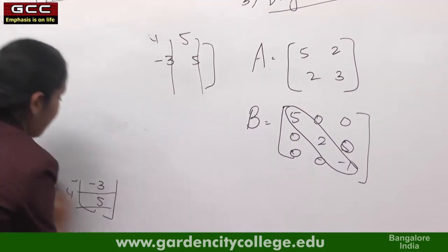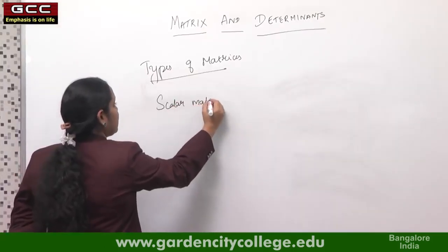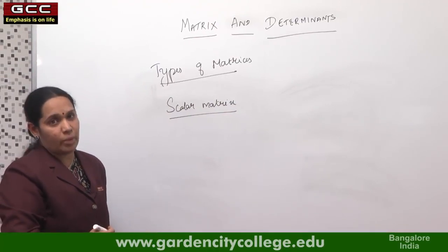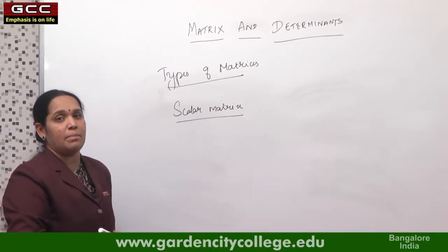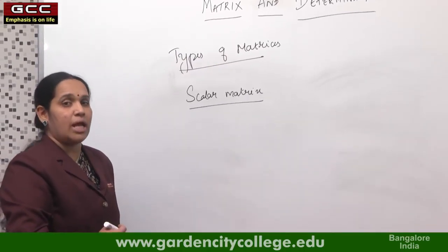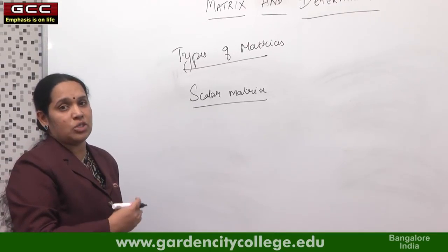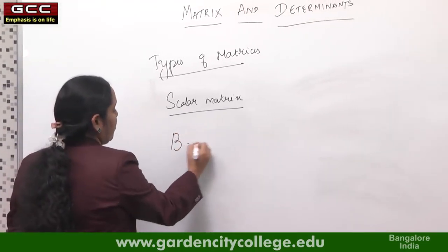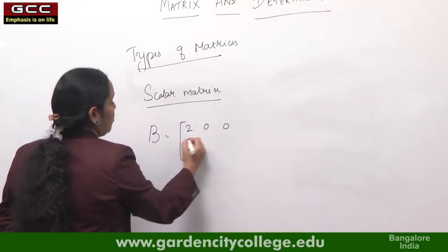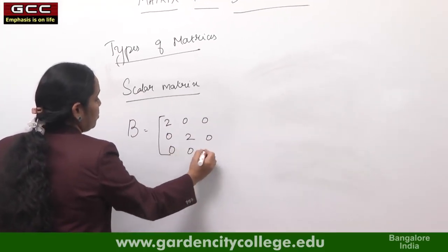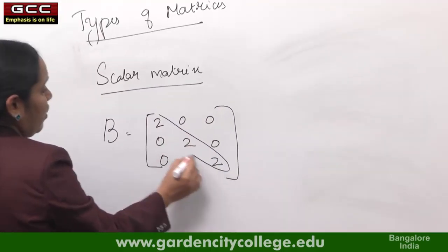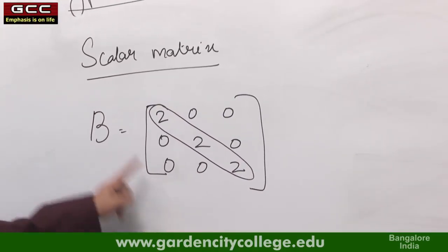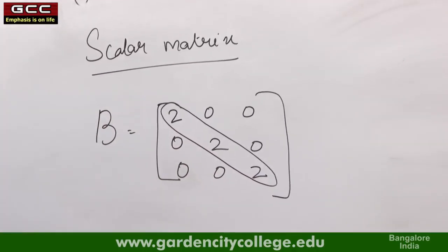The next type is a scalar matrix. A scalar matrix is a diagonal matrix in which all the diagonal elements are the same. So it is a square matrix where only principal diagonal elements are non-zero and all are equal. For example, B = [2, 0, 0; 0, 2, 0; 0, 0, 2]. All diagonal elements are the same, so this is called a scalar matrix.